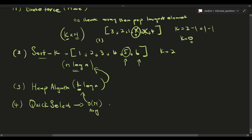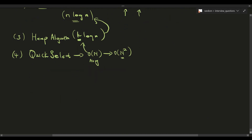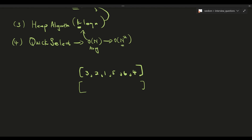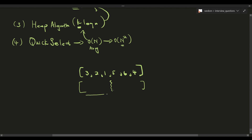The Quick Select algorithm gives us O(n) time complexity on average, which is much better than the heap, but in the worst case it can be O(n²). At a high level, you can think of it as shrinking our search space. We have what we call a partition — its purpose is to bring all elements less than the partition to the left and all elements greater than the partition to the right.